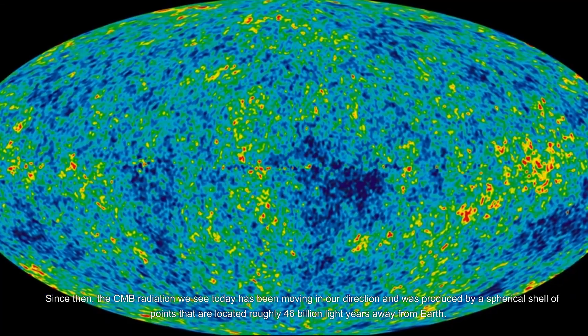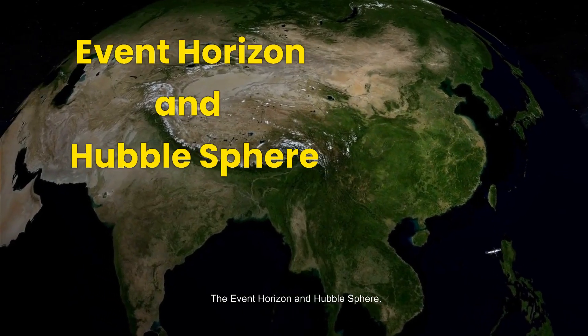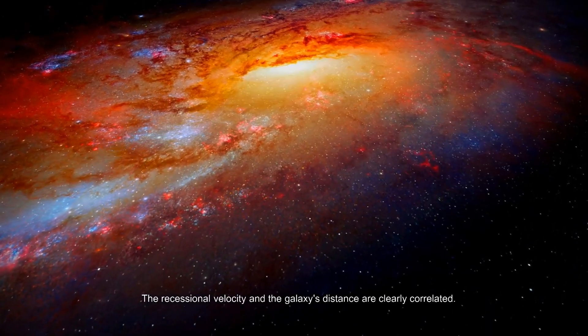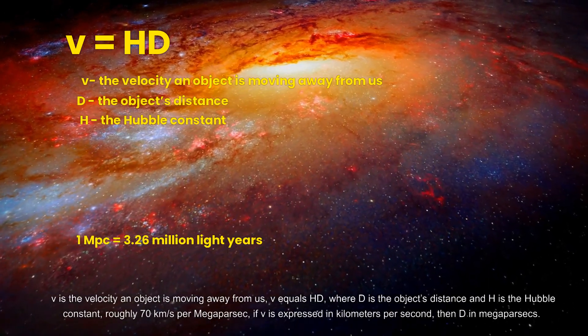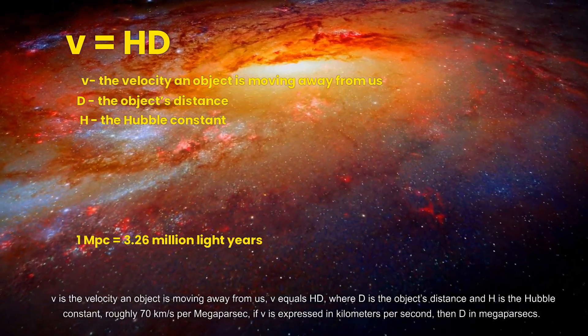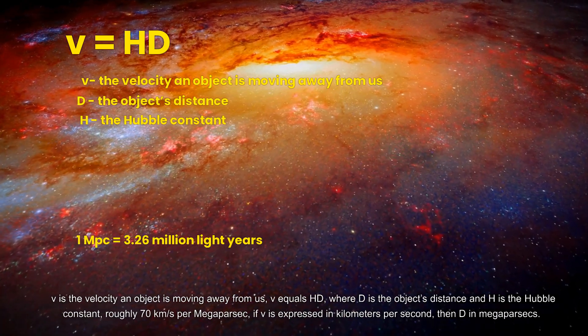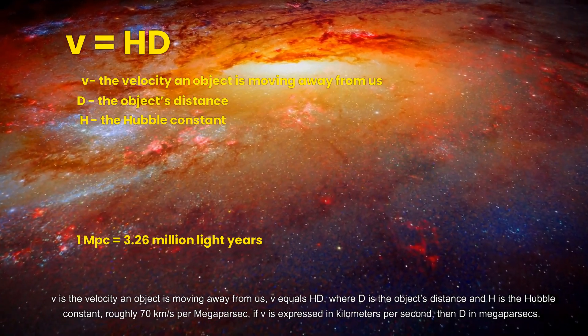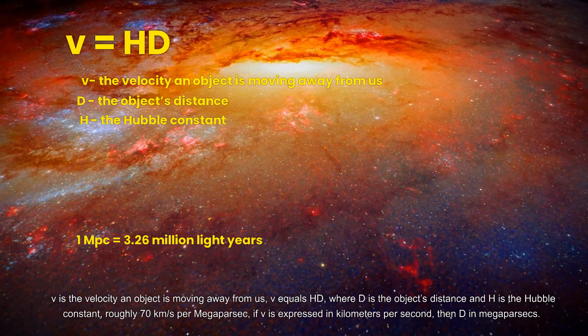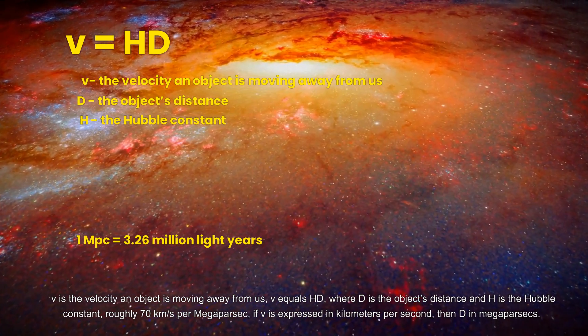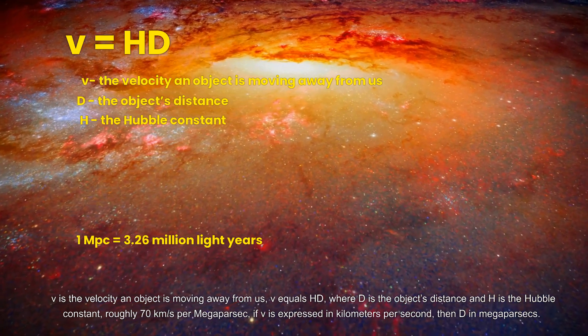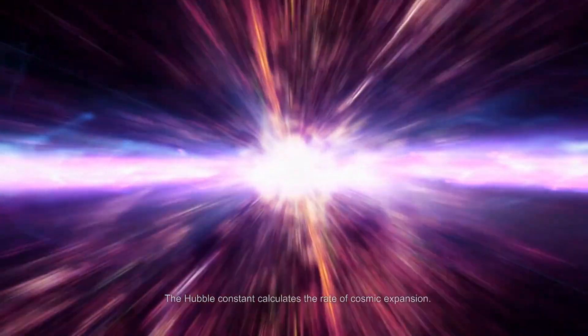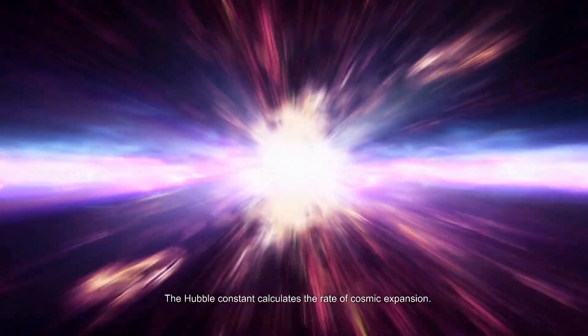The event horizon and Hubble sphere: the recessional velocity and the galaxy's distance are clearly correlated. v equals HD, where v is the velocity an object is moving away from us, D is the object's distance, and H is the Hubble constant, roughly 70 kilometers per second per megaparsec. If v is expressed in kilometers per second, then D in megaparsecs. The Hubble constant calculates the rate of cosmic expansion.